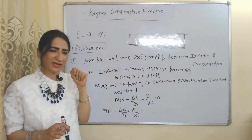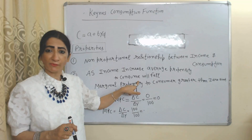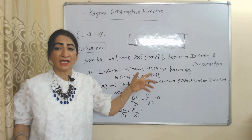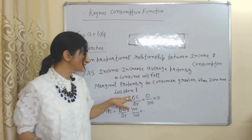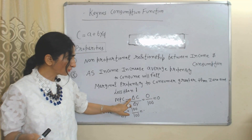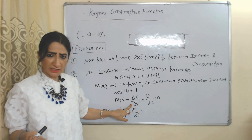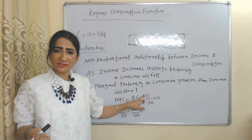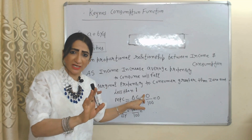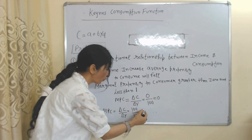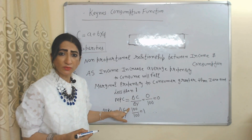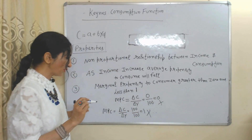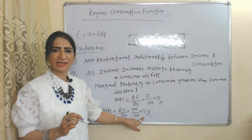As income increases, the average propensity to consume (APC) will fall, because the increase in consumption is smaller compared to the increase in income. The marginal propensity to consume (MPC) is calculated as change in consumption over change in income. If MPC equals zero, that means a change in income leads to zero change in consumption — which is not possible. If MPC equals 1, we are consuming 100% of our income — but we don't consume 100% of income either. That's why according to absolute income hypothesis, MPC is greater than zero and less than one.